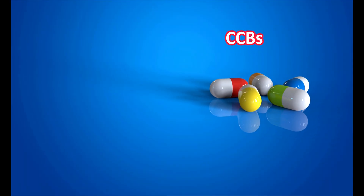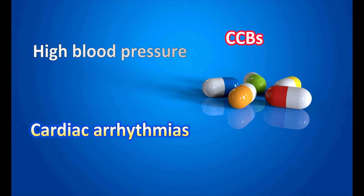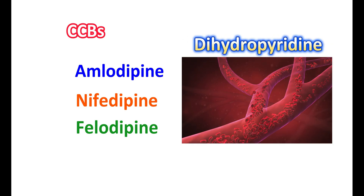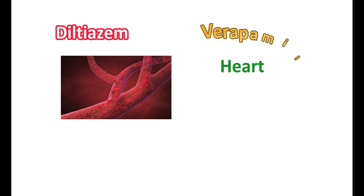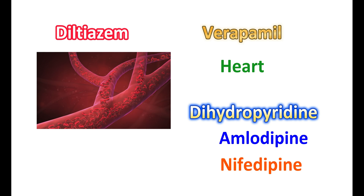Calcium channel blockers, commonly known as CCBs, are often used to control high blood pressure. A few are also used to control cardiac arrhythmias. Medications like amlodipine, nifedipine, and felodipine are examples that belong to the dihydropyridine category; they act selectively on blood vessels and produce vasodilation. Diltiazem is another CCB that can act both on blood vessels and the heart. Verapamil mainly acts on the heart with little activity on blood vessels. Among these, dihydropyridines like amlodipine and nifedipine are highly associated with the induction of leg swelling.